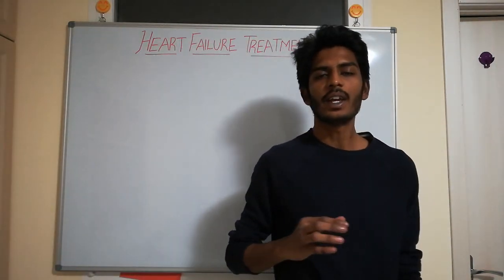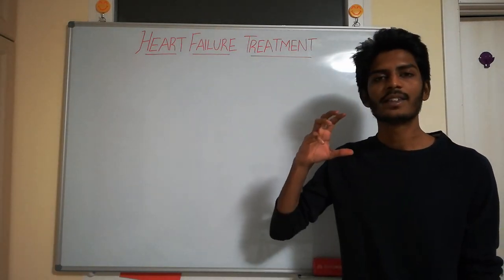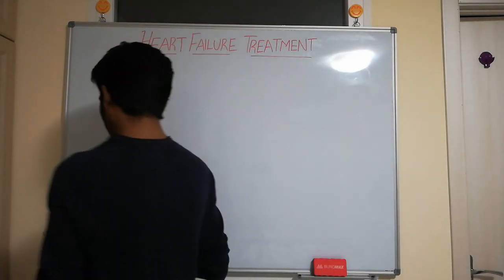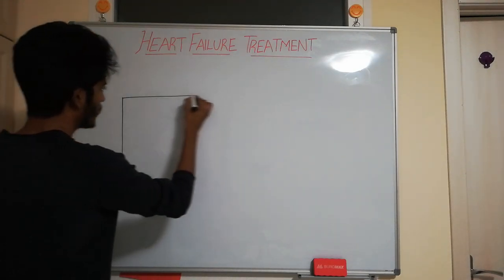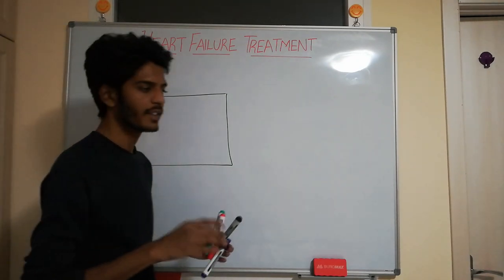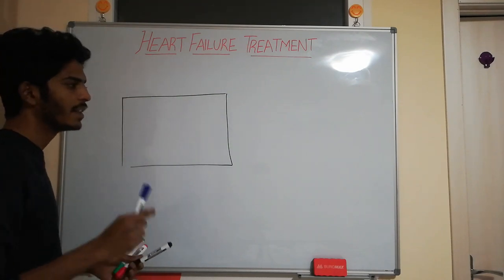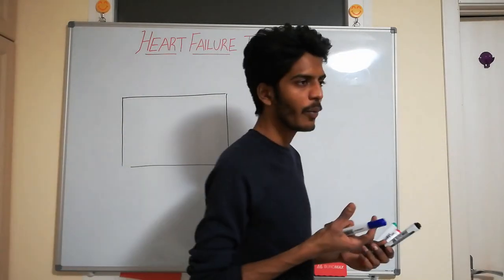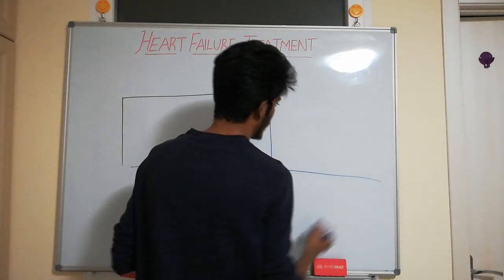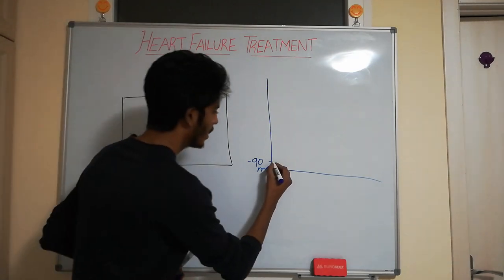Now let's understand how heart muscle contracts. Let's take a cardiomyocyte. When this cardiomyocyte is at rest — not doing any electrical activity — the membrane of the cardiac muscle has some electrical voltage. We call that the resting membrane potential. Let's take minus 90 millivolts as the resting membrane potential for this cardiac myocyte.